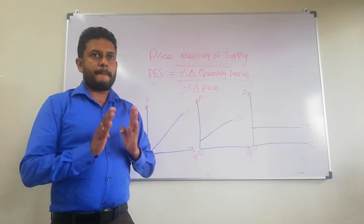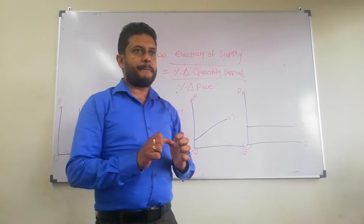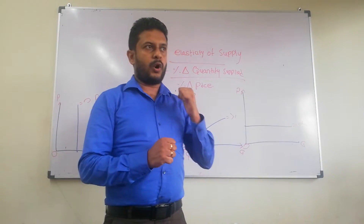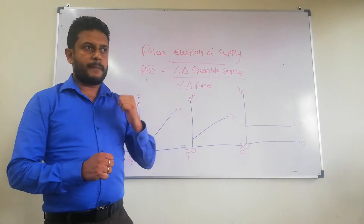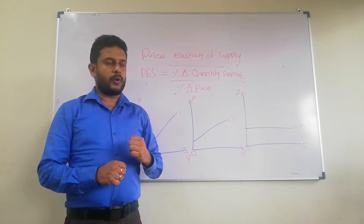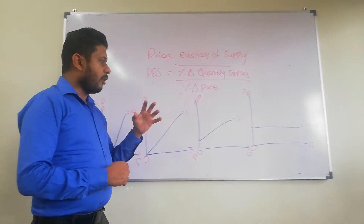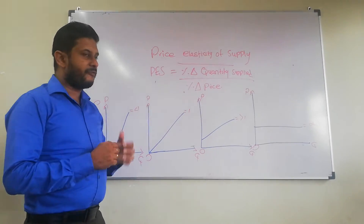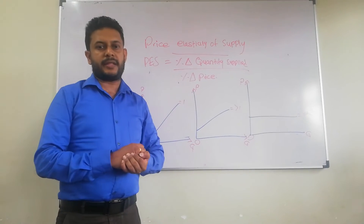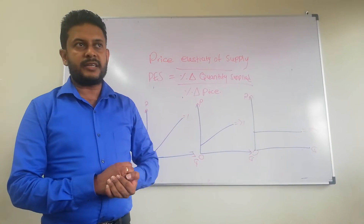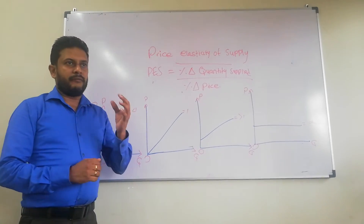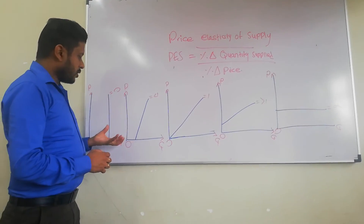Price elasticity of supply will always show a positive value. There are 5 types of varieties in price elasticity of supply, and we will discuss each one.